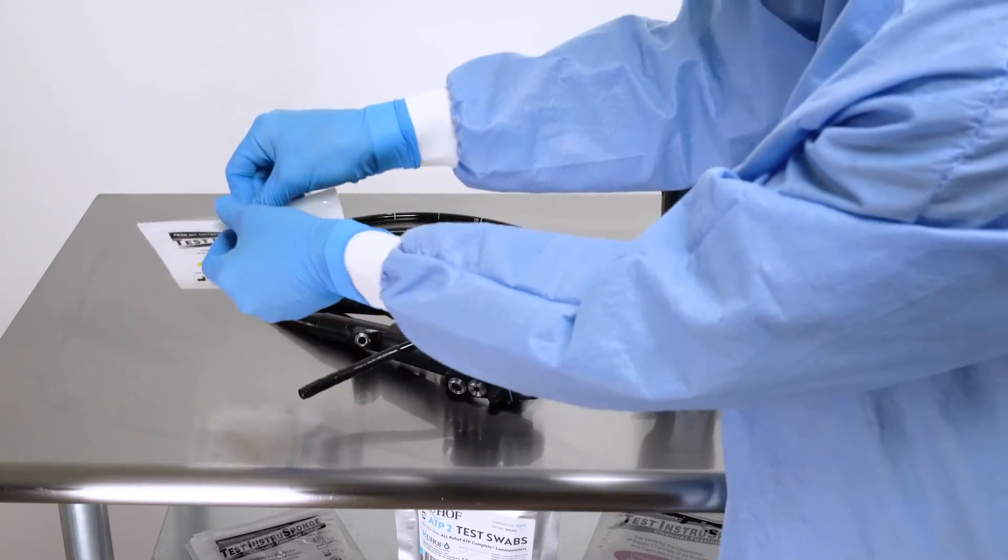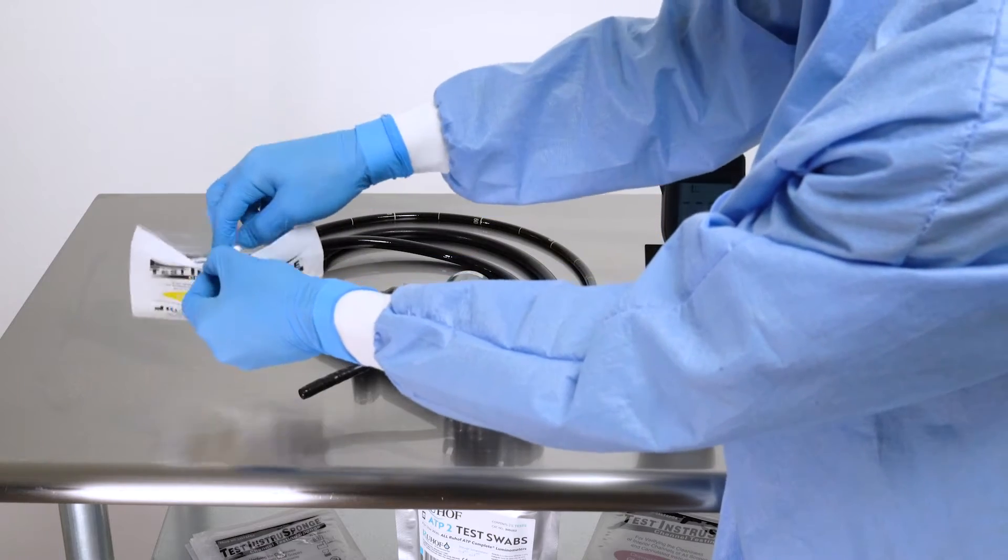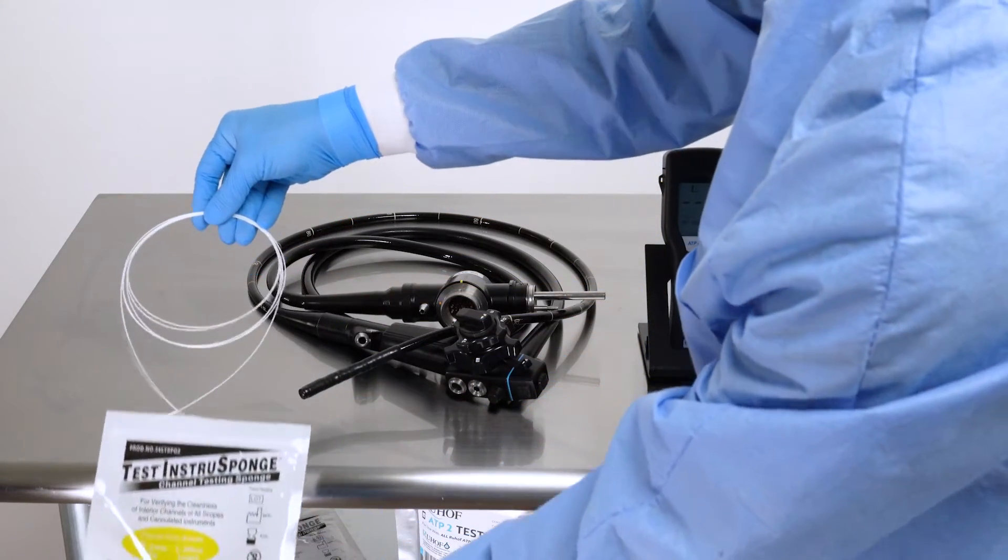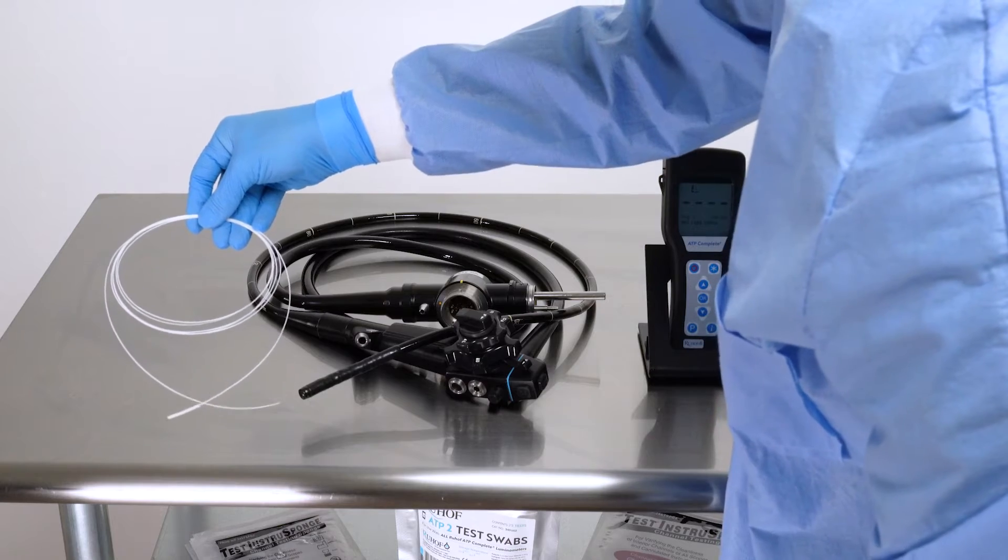Select the appropriately sized Ruhoff test Instra sponge based on the size of the inside cannula of the scope you are testing, and remove it from the packaging.